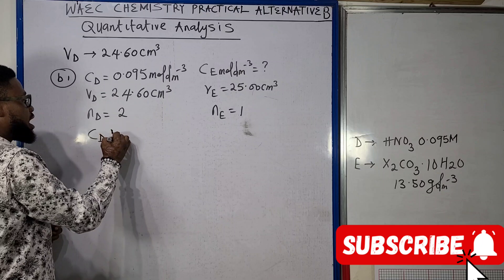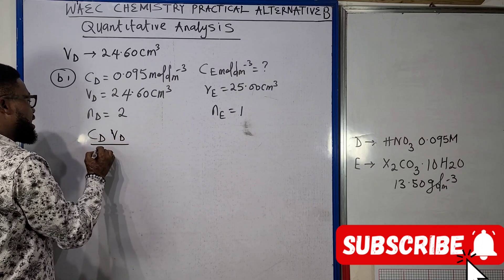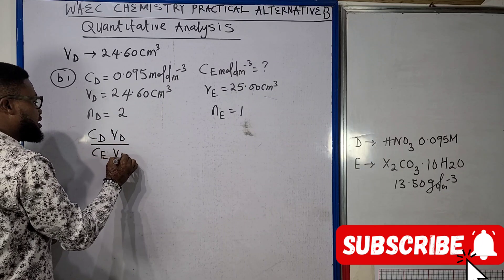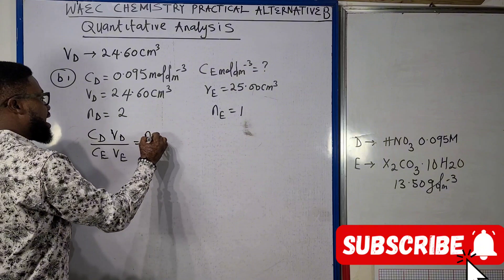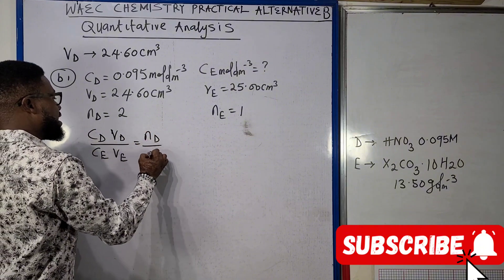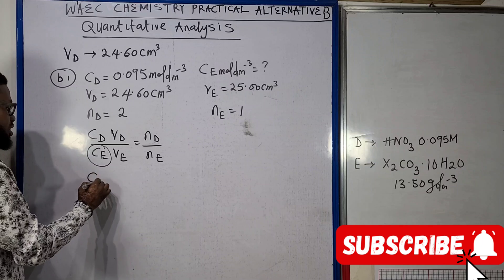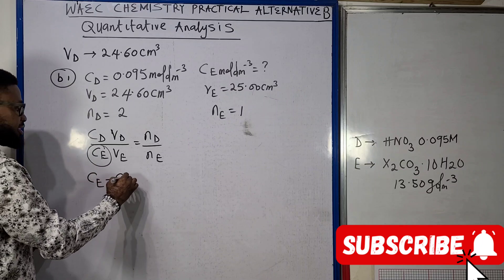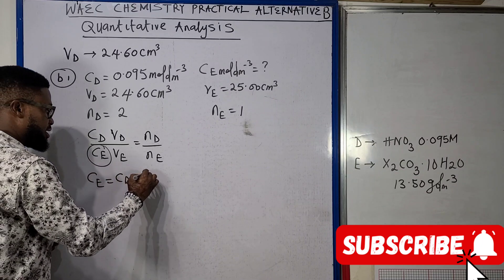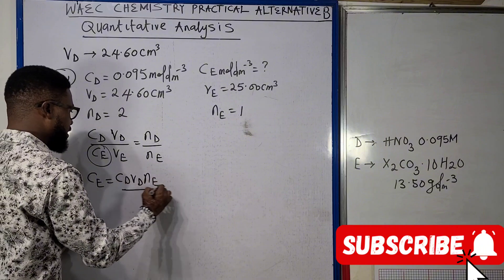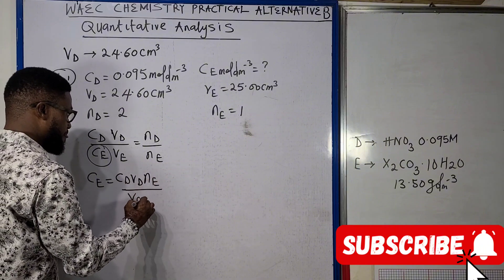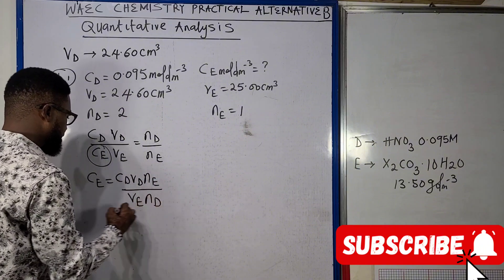If we use the normal formula: CDVD / CEVE equals ND / NE. Since we are looking for CE, we can make CE the subject. So that means CE equals (CD × VD × NE) / (VE × ND).